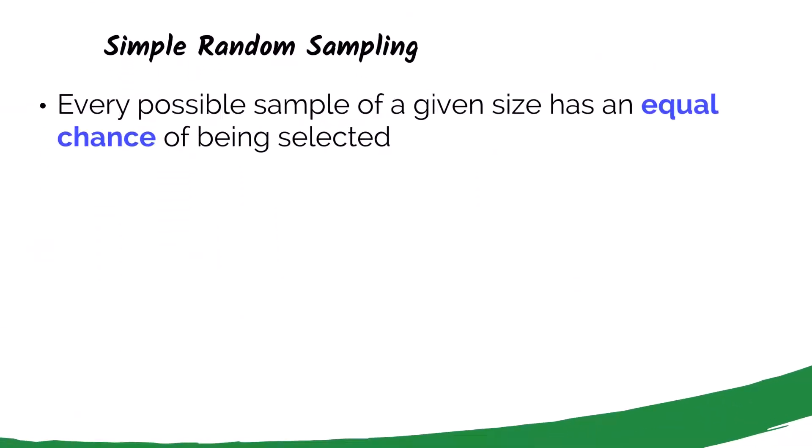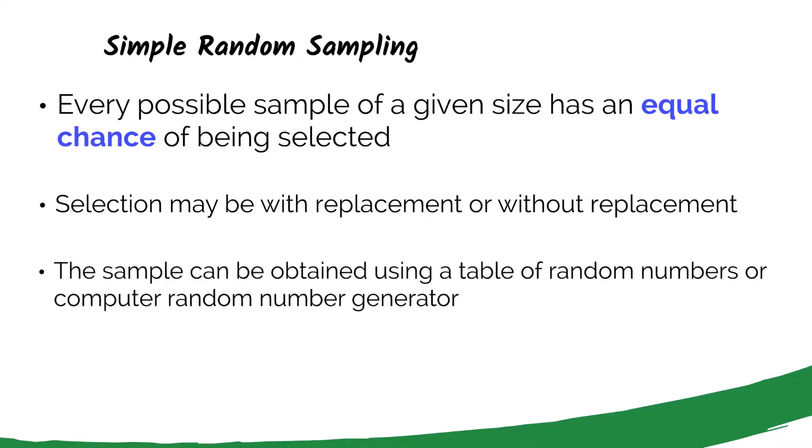Simple random sampling is a very commonly used sampling technique. This is where every possible sample of a given size has an equal chance of being selected. Selection can then be done with replacement. This means if I pull a sample of people out of the college, I can put them back in so they could be selected again. Or we can do it without replacement, meaning once I pull a sample out of the population, they are no longer eligible from future sampling. A simple random sample can be attained using a table of random numbers or a computer random number generator. This is something we could do in Excel.